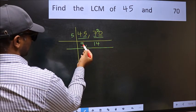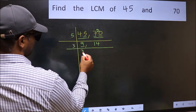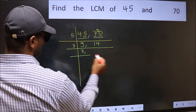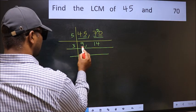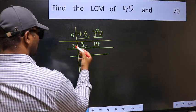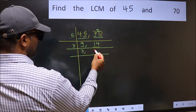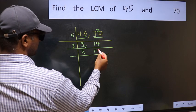Now we have 9 here. 9 is divisible by 3 — 3 threes are 9. The other number, 14, is not divisible by 3, so you write it down as it is.